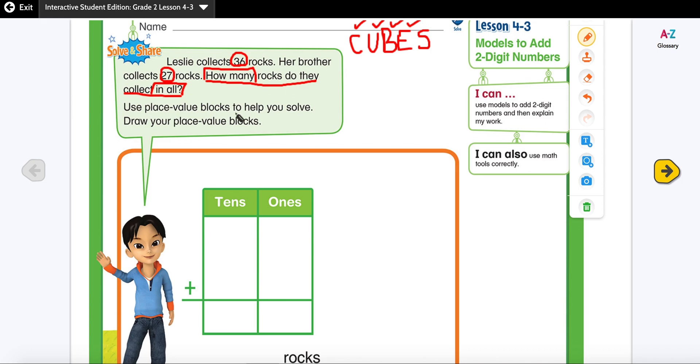E stands for evaluate my steps. So we are going to use the place value blocks and we're also going to use our standard algorithm method. So I'm going to write the equation which is 36 plus 27 and we need to find the sum. Sum is our vocabulary word which means the answer to an addition problem.